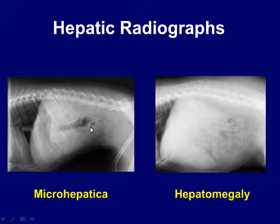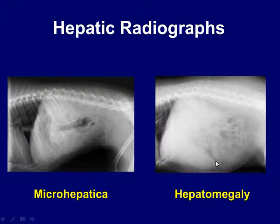Something as simple as this really gives me that first head start on: am I looking at a chronic hepatopathy or maybe a congenital hepatopathy with a tiny little liver, versus a big, big liver? Am I looking at cancer, or am I looking at Cushing's disease, a vacuolar hepatopathy, something of that sort?